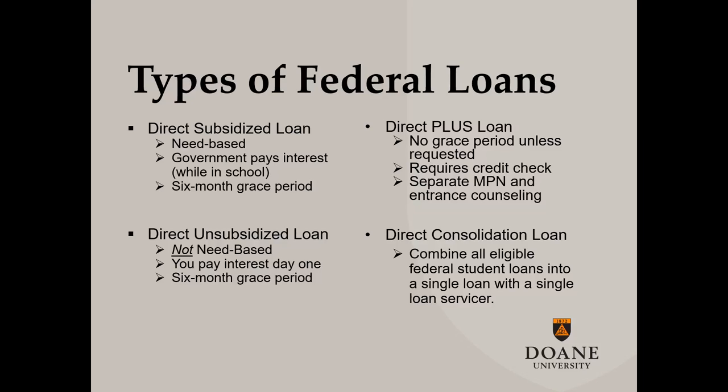There are four types of federal student loans available for college students: direct subsidized, direct unsubsidized, direct plus, and a direct consolidated loan. It is important to know that each loan may have slightly different eligibility requirements and components to it.